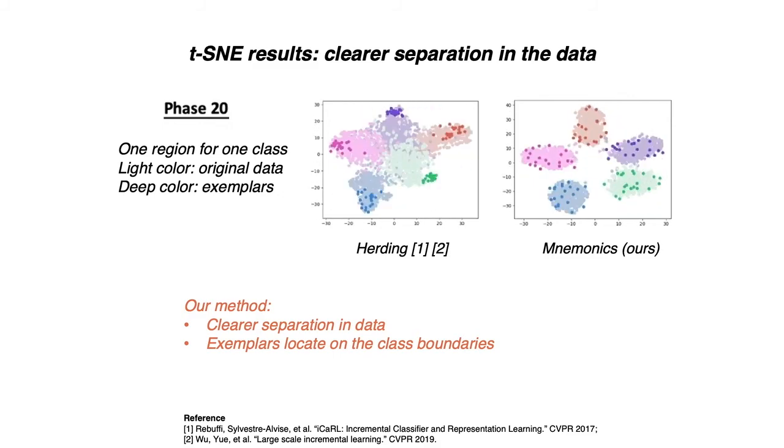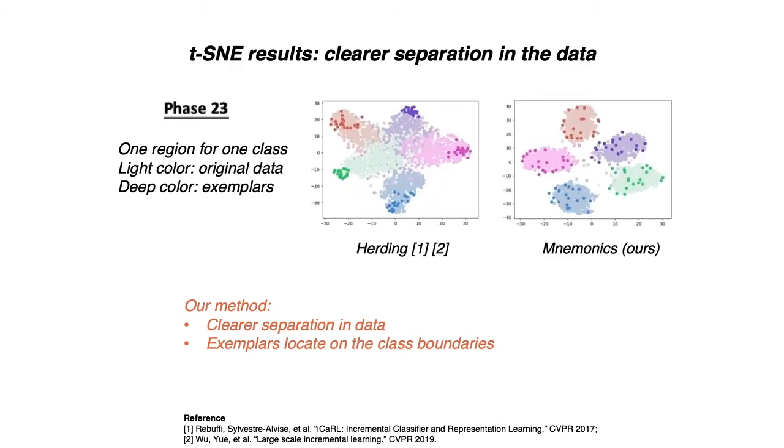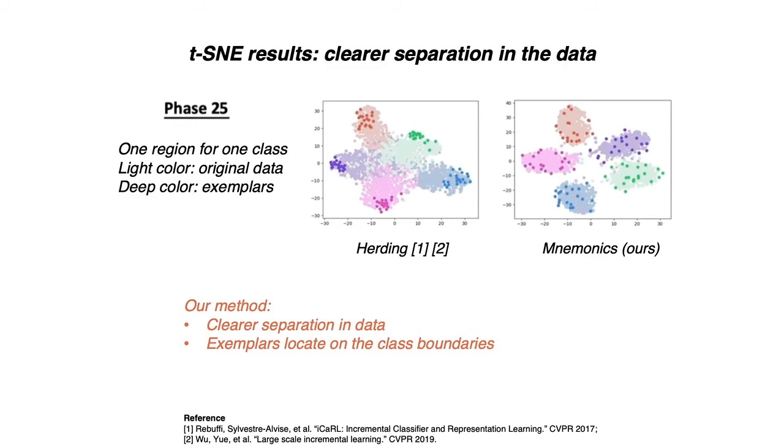We can say that compared to the baseline method herding, our mnemonics exemplars yield a clearer separation in the data space. In addition, they are mostly located on the boundaries between different classes, which is essential to derive high-quality classification models.